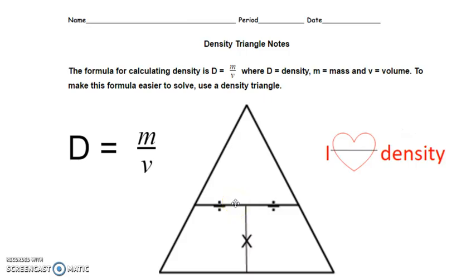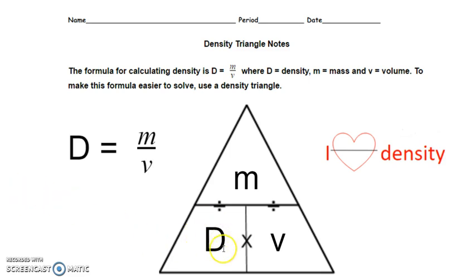Let's talk about how the triangle works. The triangle is divided into three sections with two division signs and one multiplication sign. To use it, put the variables in where they belong: density goes on the bottom left, mass goes on the top, and volume goes on the bottom right. If you look at it, you can see mass over volume — mass divided by volume — which matches the formula.